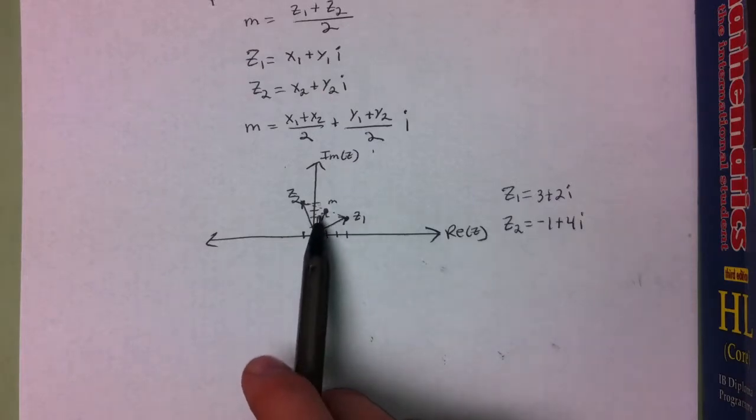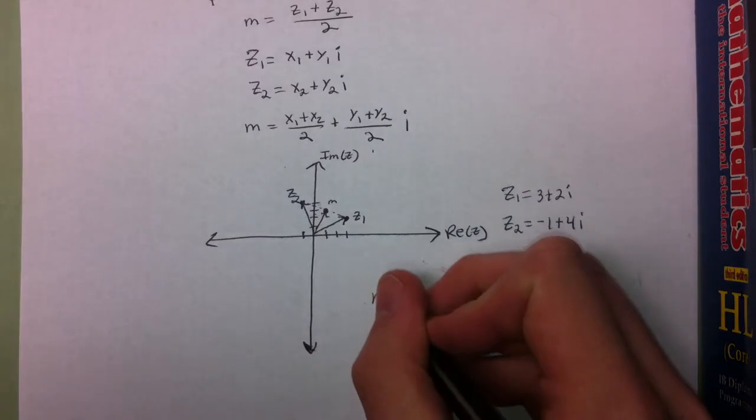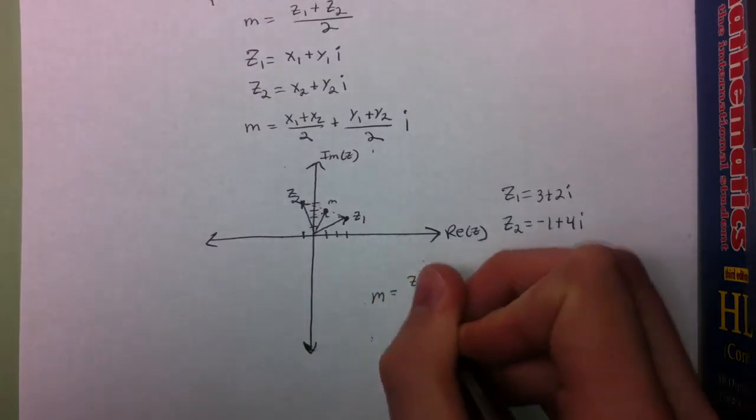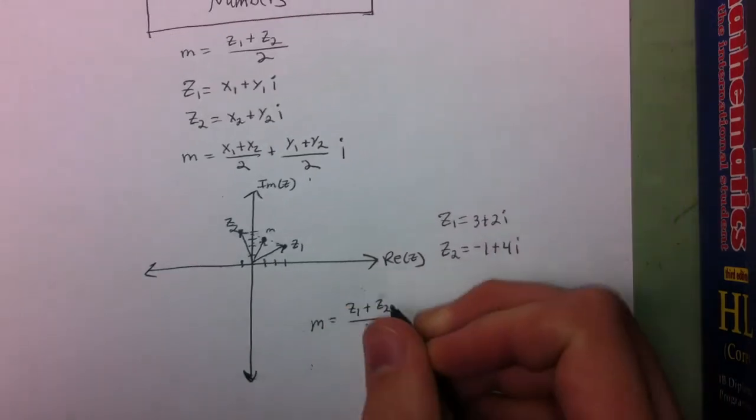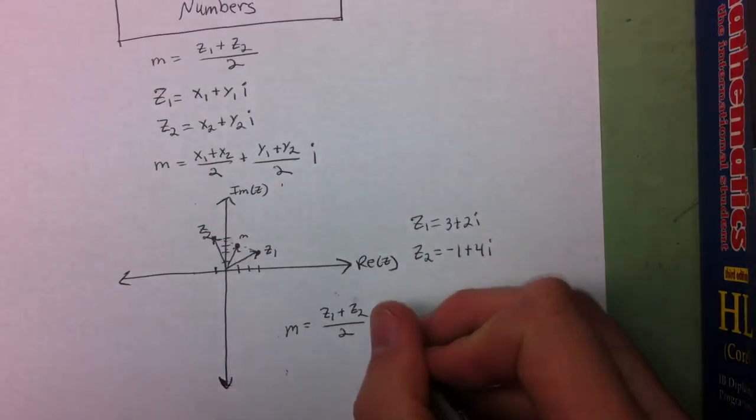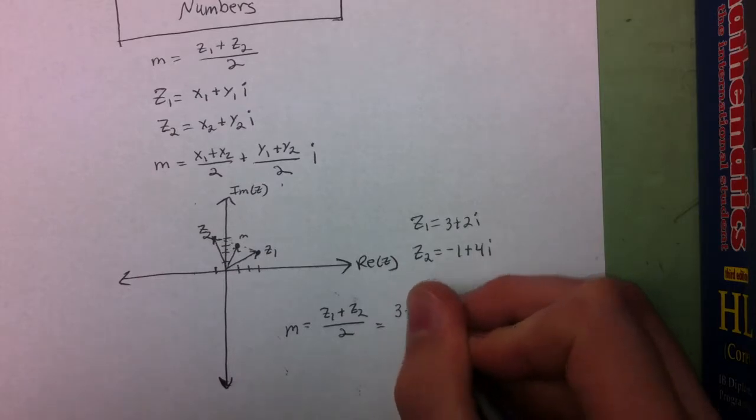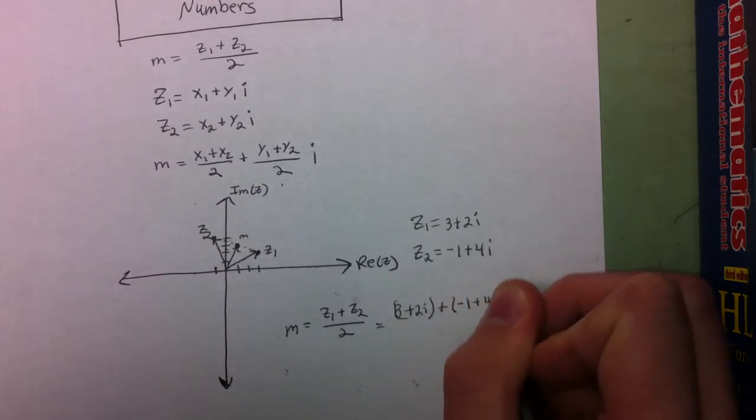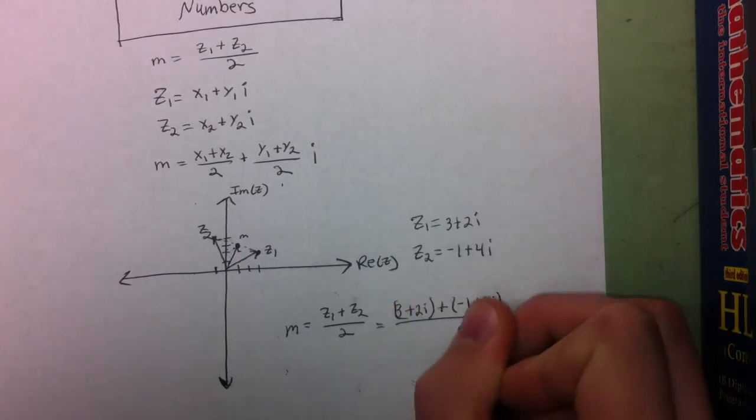So if we want to find the coordinates of that point, we would say that the midpoint equals z sub 1 plus z sub 2 over 2. That means we're going to add 3 plus 2i to negative 1 plus 4i and divide by 2.